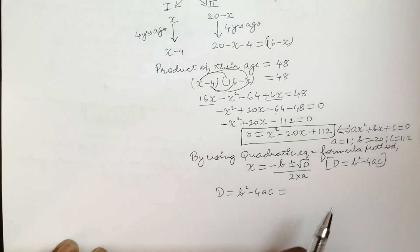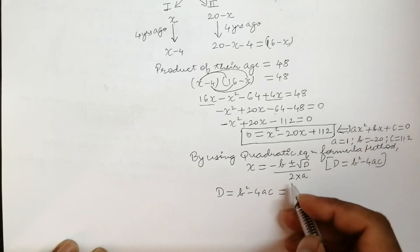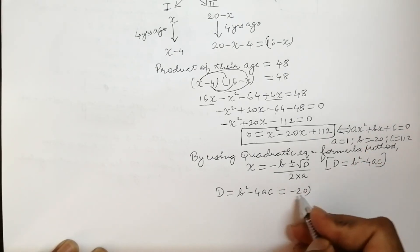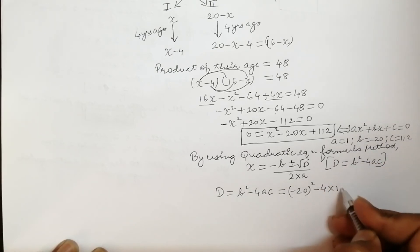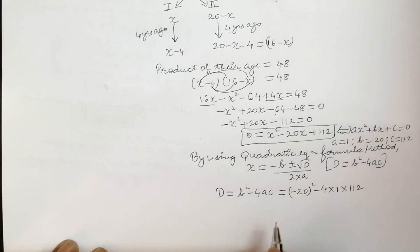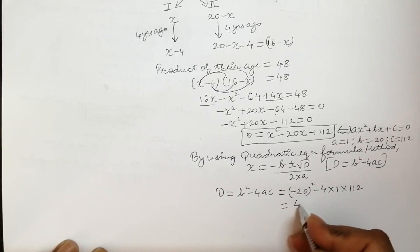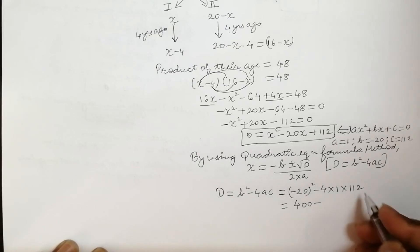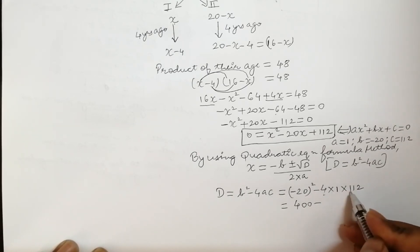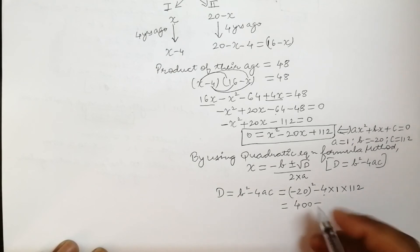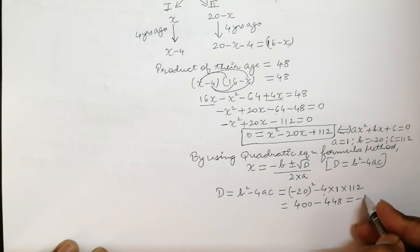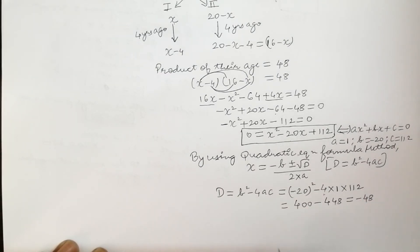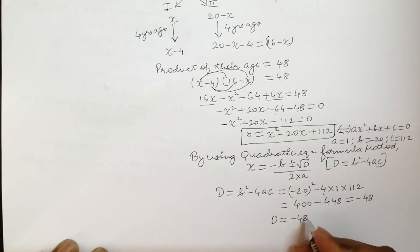तो ये सारे values अब D में लगाएंगे: D = b square minus 4ac = (minus 20)² minus 4 into 1 into 112 = 400 minus 448 = minus 48. तो D का value minus 48 मिला है।